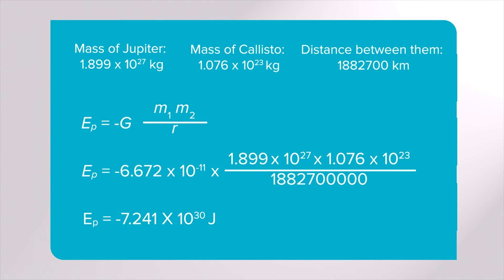This means that this is work done by the system if Callisto was moved from infinity to its current position around Jupiter. It would fall into place, hence no work is done on them, it is done by them. We could also use this equation to determine the change in gravitational potential energy.